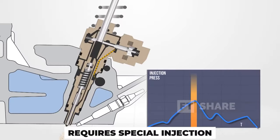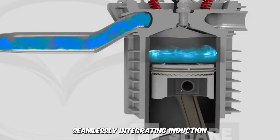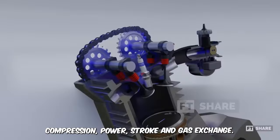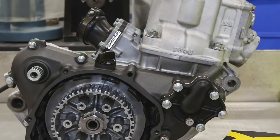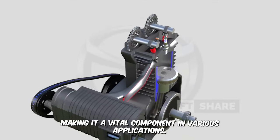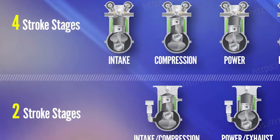In essence, a two-stroke engine operates through a precise sequence of steps, seamlessly integrating induction, compression, power stroke, and gas exchange. This cyclic process dictates the engine's efficiency and performance, making it a vital component in various applications.